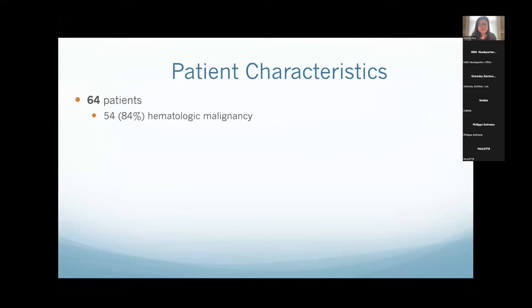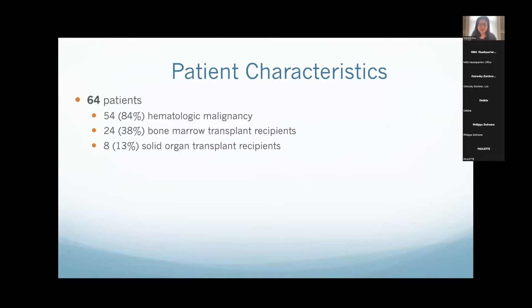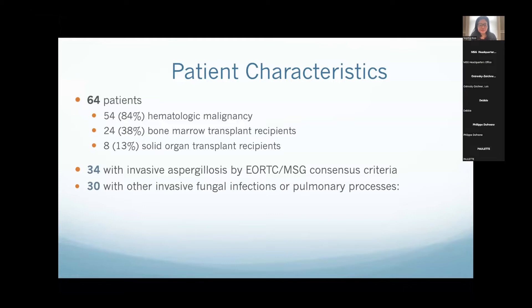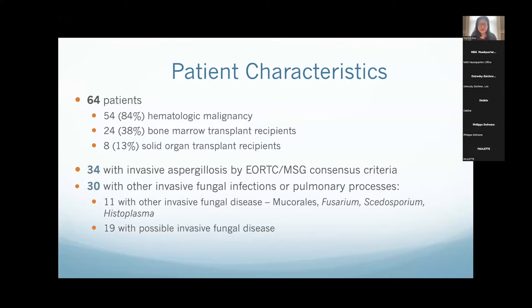In this initial study, we enrolled 64 patients prospectively — people we didn't know if they had invasive fungal disease or not, but they were all suspected to have it and were starting their workup. Most were patients with hematologic malignancy, some bone marrow transplant recipients, and a minority were solid organ transplant recipients, mostly lung transplant patients. At the end of their entire workup, including biopsies, 34 had invasive aspergillosis by the EORTC-MSG consensus criteria, and 30 had other invasive fungal infections or pulmonary processes — including Nocardia, Fusarium, Scedosporium, Histoplasma infections, and many with only possible invasive fungal disease with no positive mycological testing.